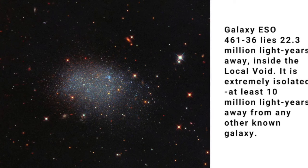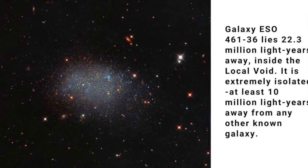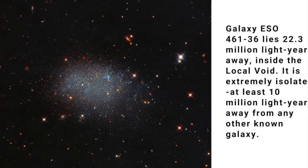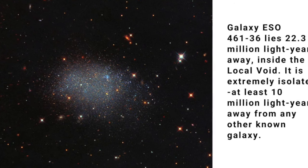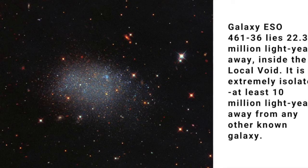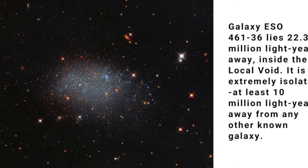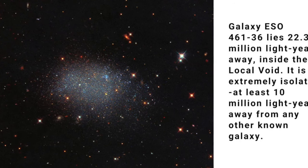The bigger and emptier the void, the weaker its gravity, and the faster the dwarf should be moving towards surrounding concentrations of matter. In fact, ESO 46136 is rushing out of the local void at 350 kilometers per second.